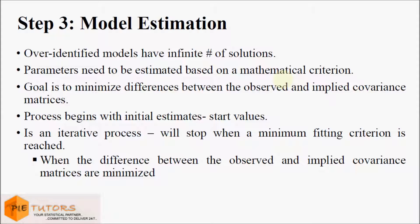The third step is model estimation. Once we have a model that is identifiable we proceed to estimate the unknown parameters. Models that have more information than the number of unknown parameters are called over-identified models, and these have an infinite number of solutions. We are required to estimate the unknown parameters using some mathematical criteria. The goal in SEM estimation is to minimize the difference between the observed and implied covariance matrix. The implied covariance matrix is specified within the model and the observed covariance matrix is determined by the observed variables.